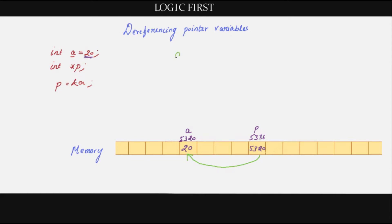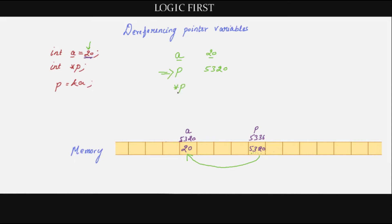Inside a printf statement, if you try to print the variable 'a', whatever value it contains will be printed — so we will have 20 in the output. If you print 'p', it contains the address 5320, so that will be printed. If you want the value of 'a' using its pointer 'p', you have to give star p. Since 'p' has an address, it will go to that address and fetch the value present there — so star p will give you 20. 'p' gives you the address; star p fetches the value at that address.